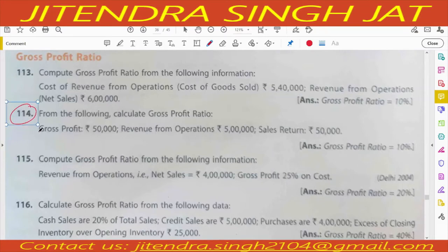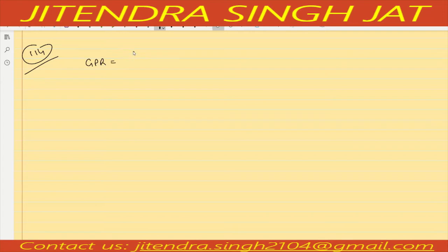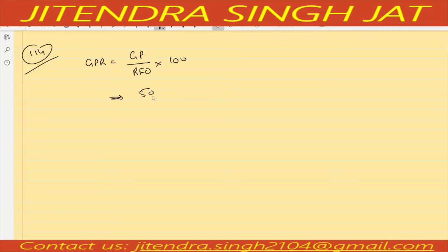Question number 114: Gross profit is given directly. Revenue from operations is given as five lakh and sales return is given as fifty thousand. Revenue from operations means net sales, and net sales means sales return is already deducted. So there is no need to use the sales return figure. Gross profit ratio is fifty thousand divided by five lakh multiplied by 100, which equals ten percent.